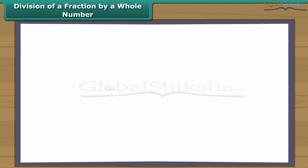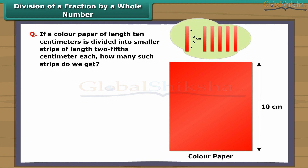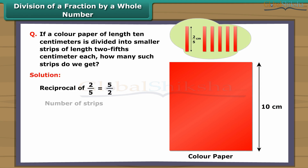Division of a fraction by a whole number. If a color paper of length ten centimetres is divided into strips of length two-fifths centimetre each, how many strips do we get? The reciprocal of two-fifths is five-halves. So ten divided by two-fifths equals ten multiplied by five-halves, giving fifty-halves. Simplifying, we get twenty-five strips. Thus, to divide a whole number by any fraction, multiply by the reciprocal of that fraction.